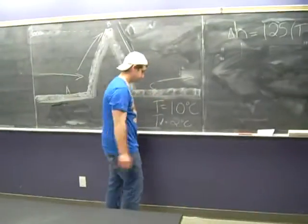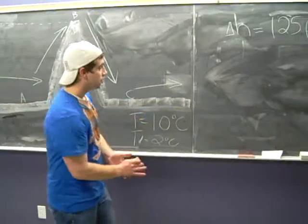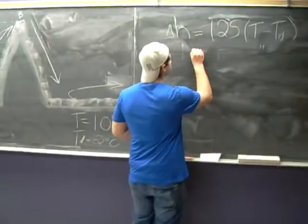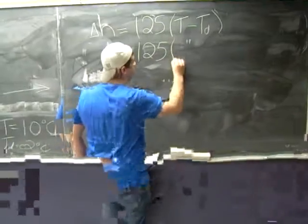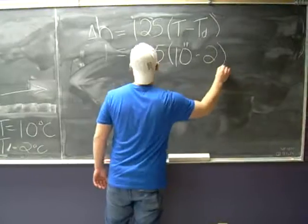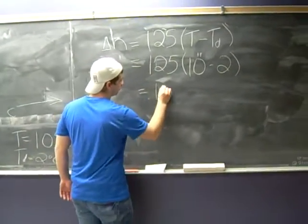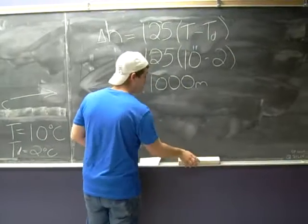Since we know our temperature and dew point temperature, we can calculate the height at which air becomes saturated. If we go back to the formula, we have 125 times our temperature of 10 degrees Celsius minus our dew point temperature of 2 will give us a height of 1,000 meters. Back to you, Bryonite.